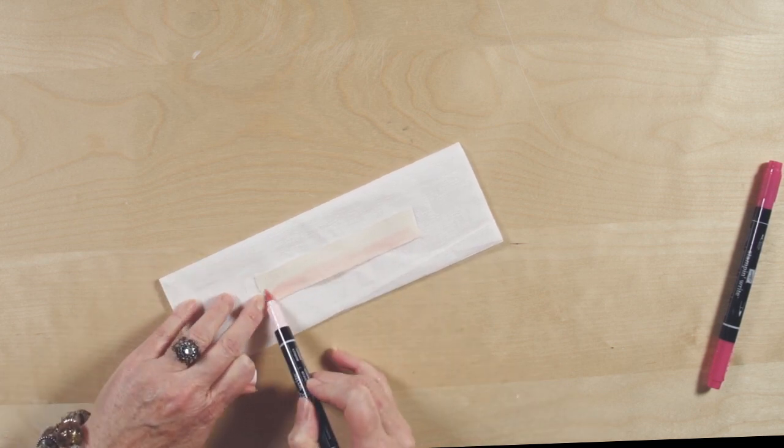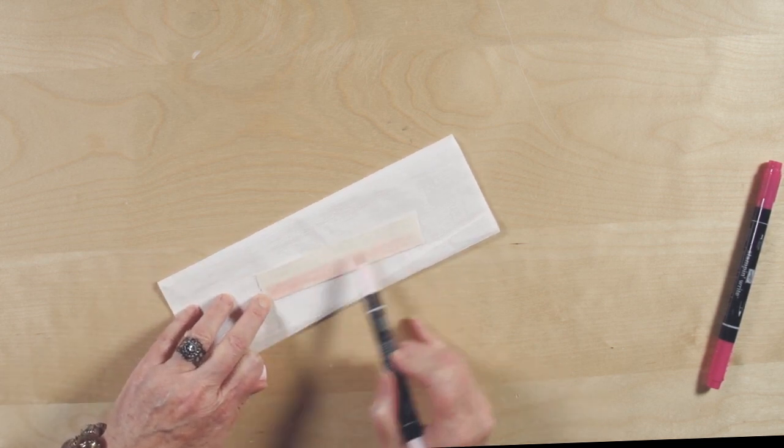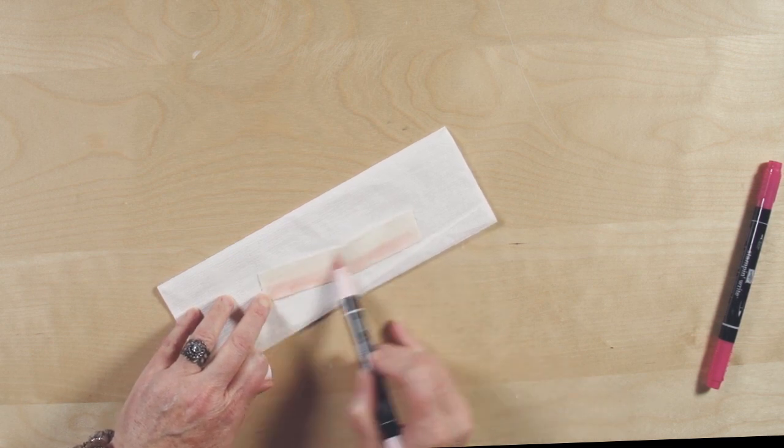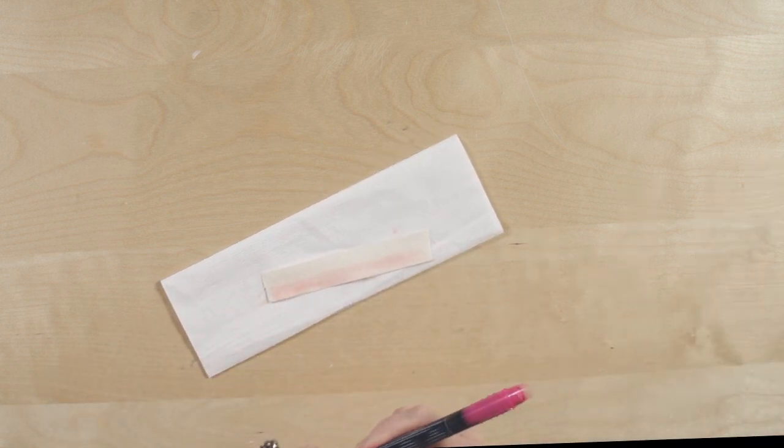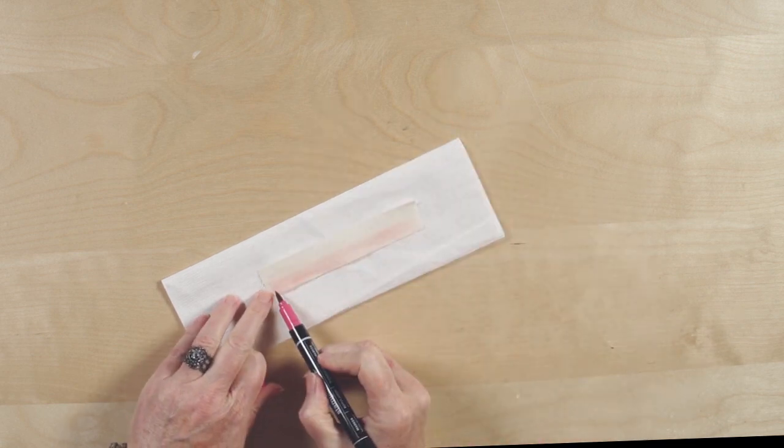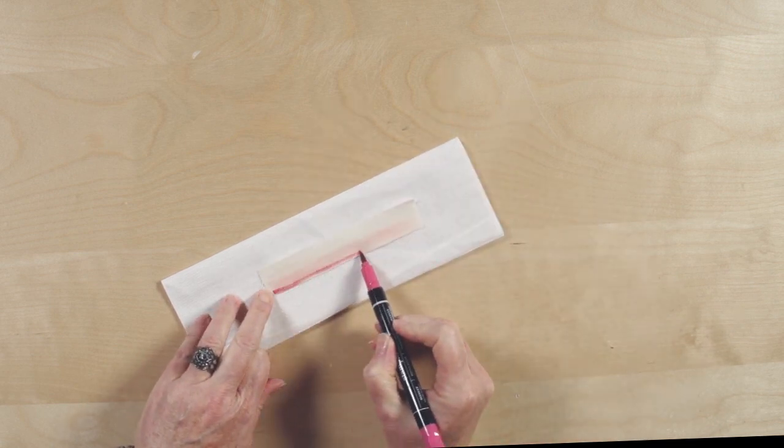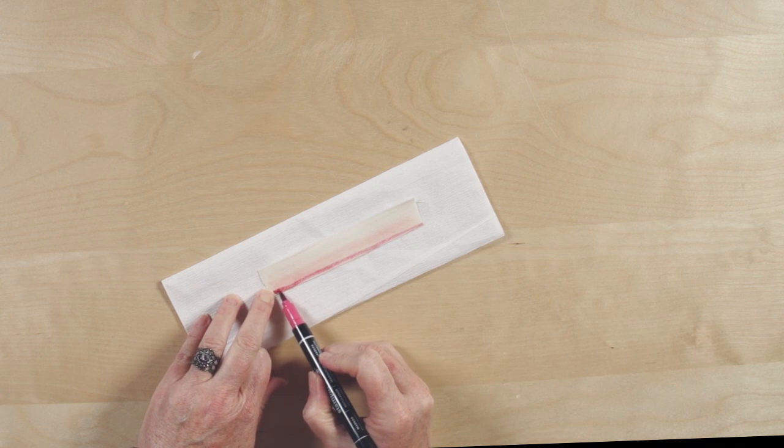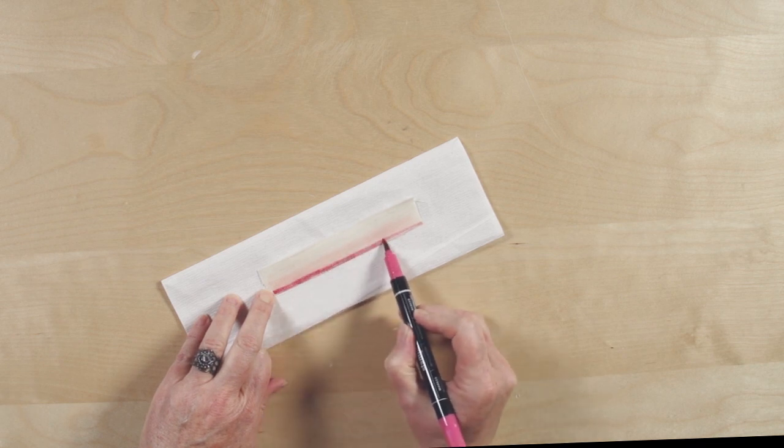It's always important to start lighter because you can always go darker. Once I have that layer done, then I'll go ahead and put in a little bit of the dark. The first color was Pink Pirouette, and this color is Melon Mambo.